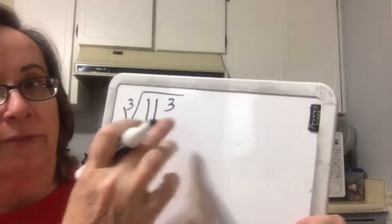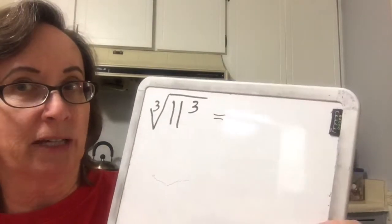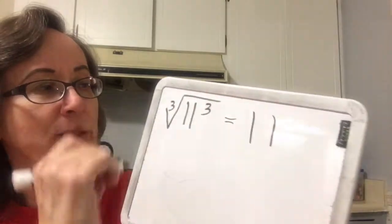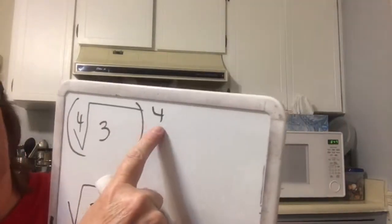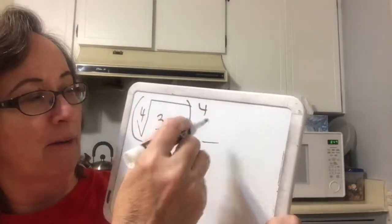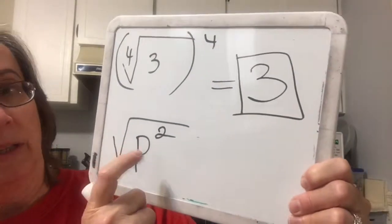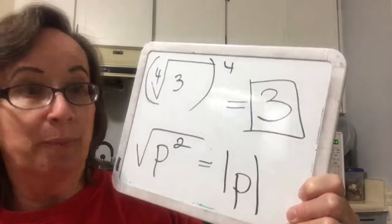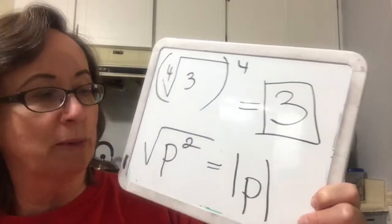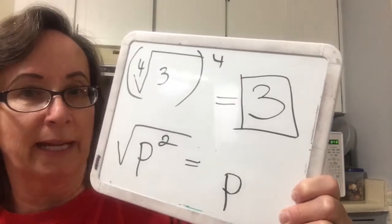We have the cubic root of 11 to the 3rd. Since I have odds, it's going to wind up being 11 — when you have the root and the power the same, you just get whatever is under the radical. On this one, we've got the 4th root and the 4th power, and we get 3. Here we have p squared and the square root of that. We learned earlier this would have to be the absolute value of p, but in this section they said assume all variables are non-negative numbers, so we no longer have to write the absolute value.